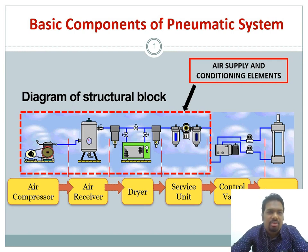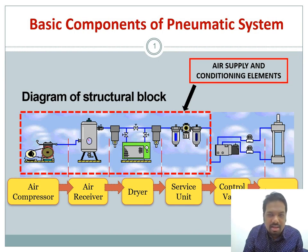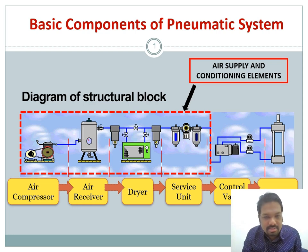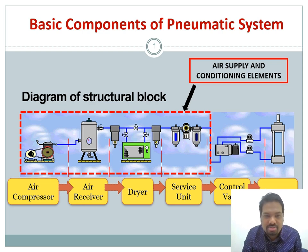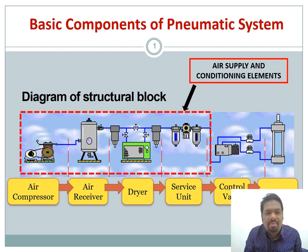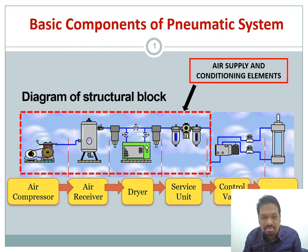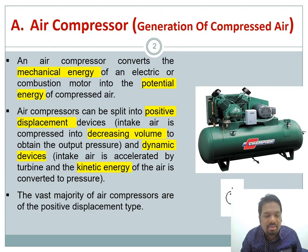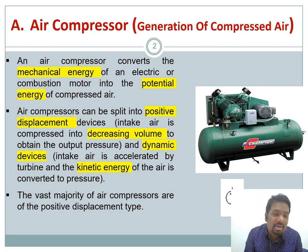Today we will see a short lecture on the basic components of a pneumatic system. This first slide shows a complete pneumatic system starting from air compressor, air receiver, dryer, service unit, control valve, and actuator. The dotted box shows the air supply and conditioning elements — meaning that is the place where compressed air is produced and prepared before being passed to the system.